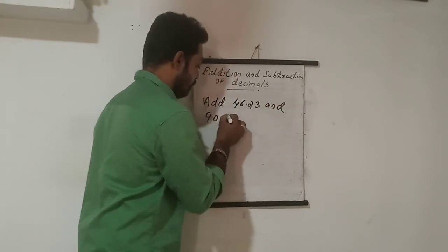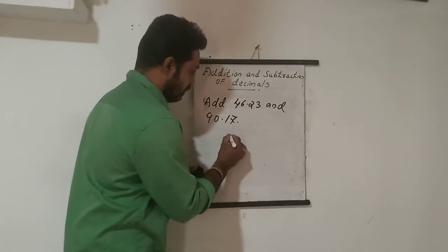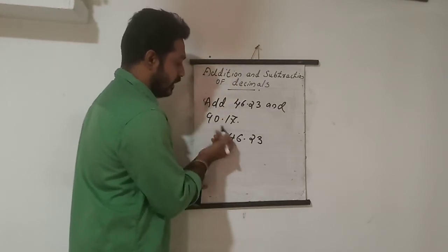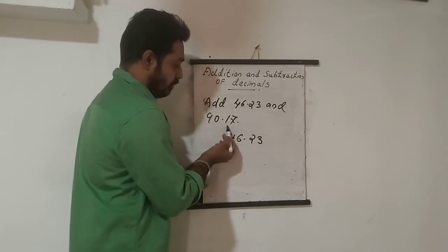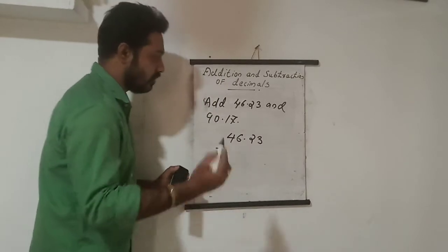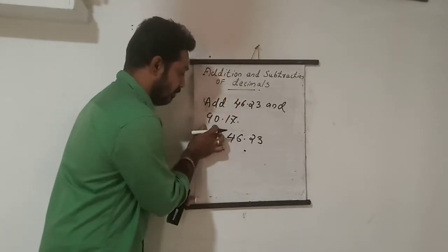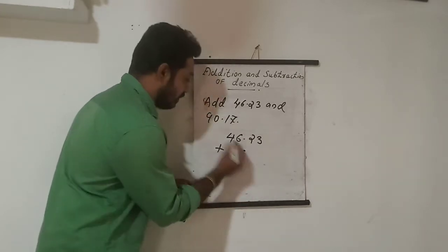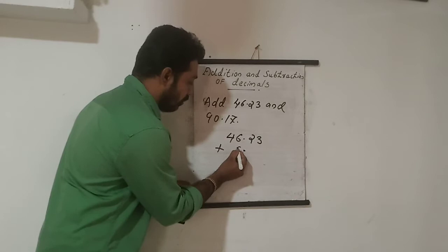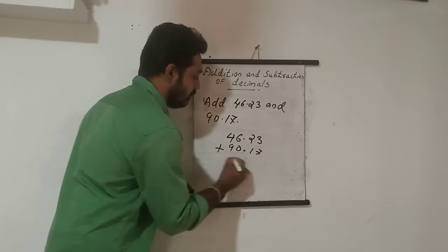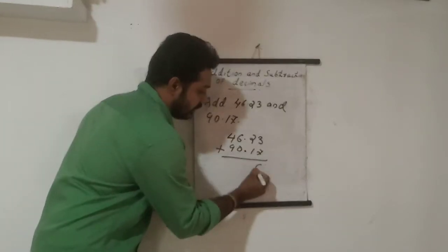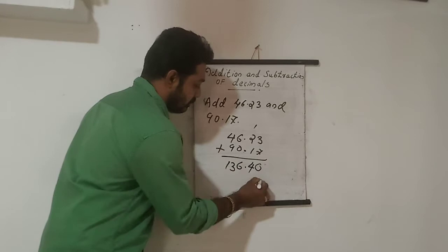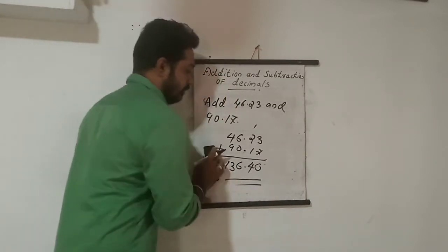90.17. So the first number is 46.23 plus 90.17. You look at the digits before the point — two numbers — and after the point — two numbers — same thing here. Write the point aligned. Seven plus three is ten, carry one; two plus one is four; we get the decimal point; zero six. Then four plus nine is 13, carry one. So the answer is 136.40.